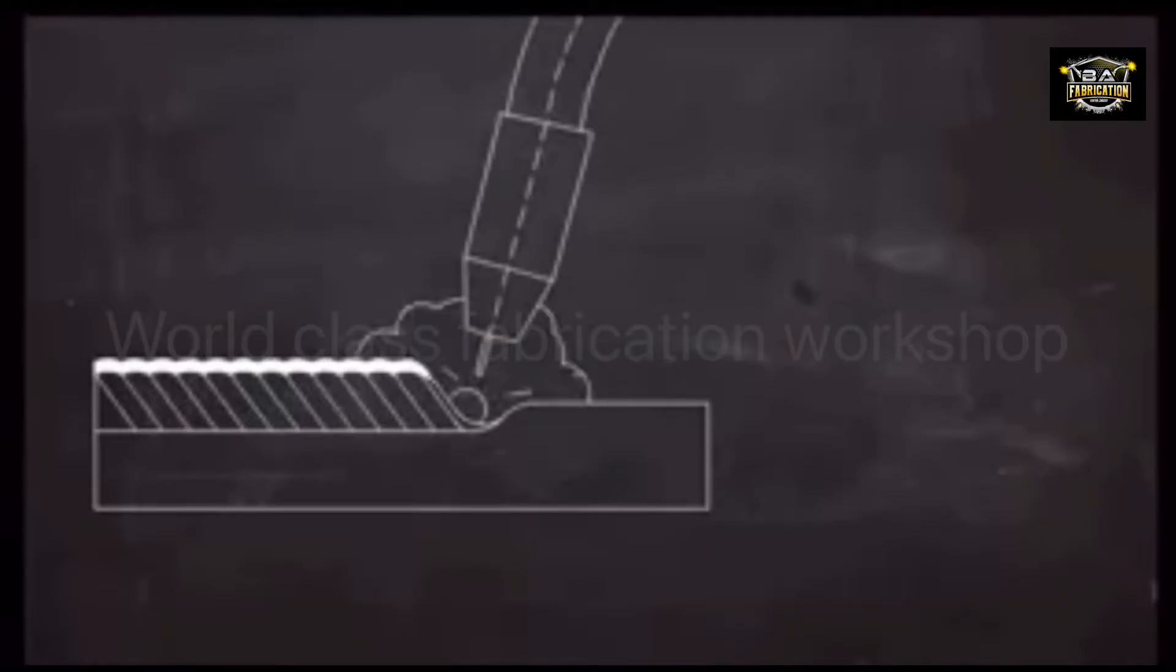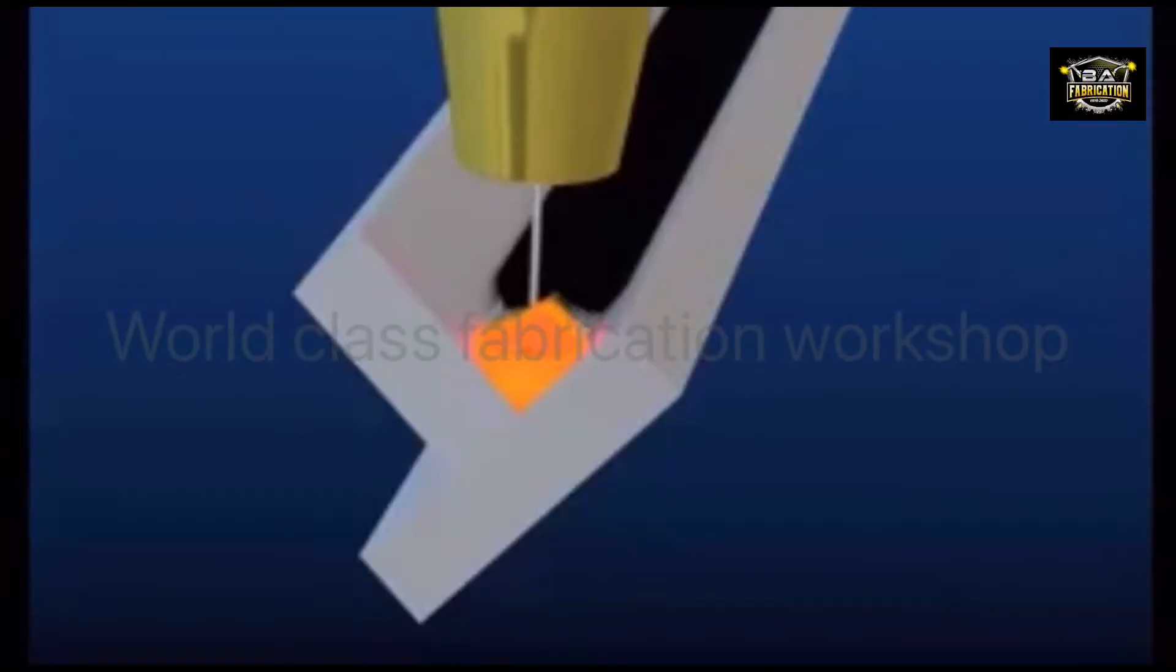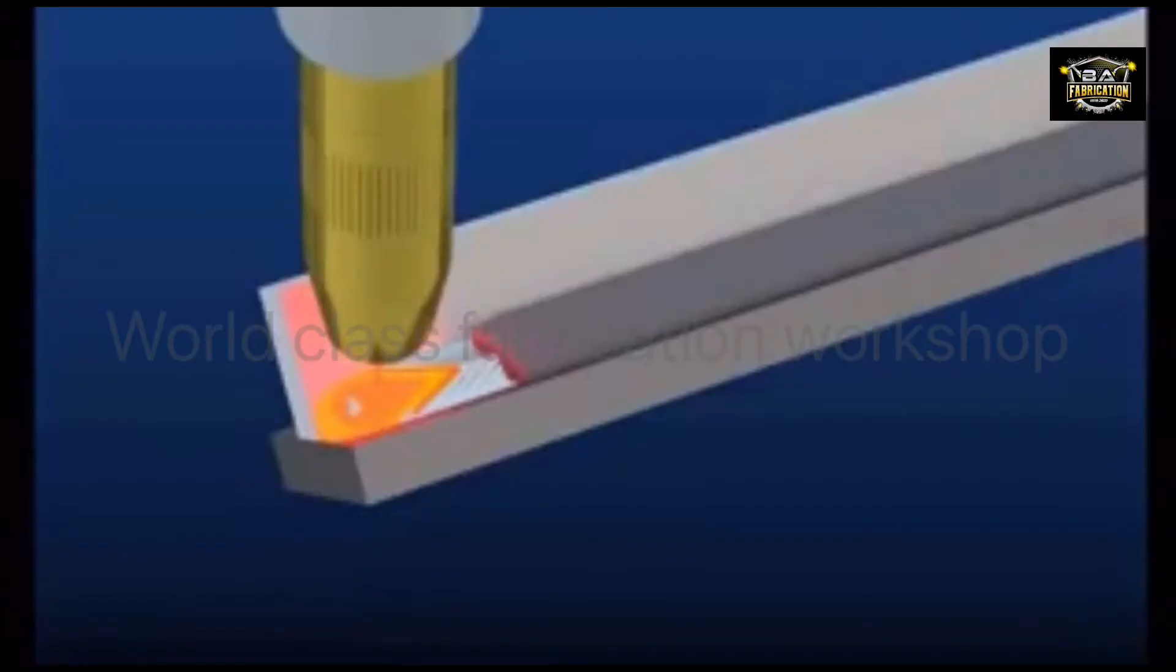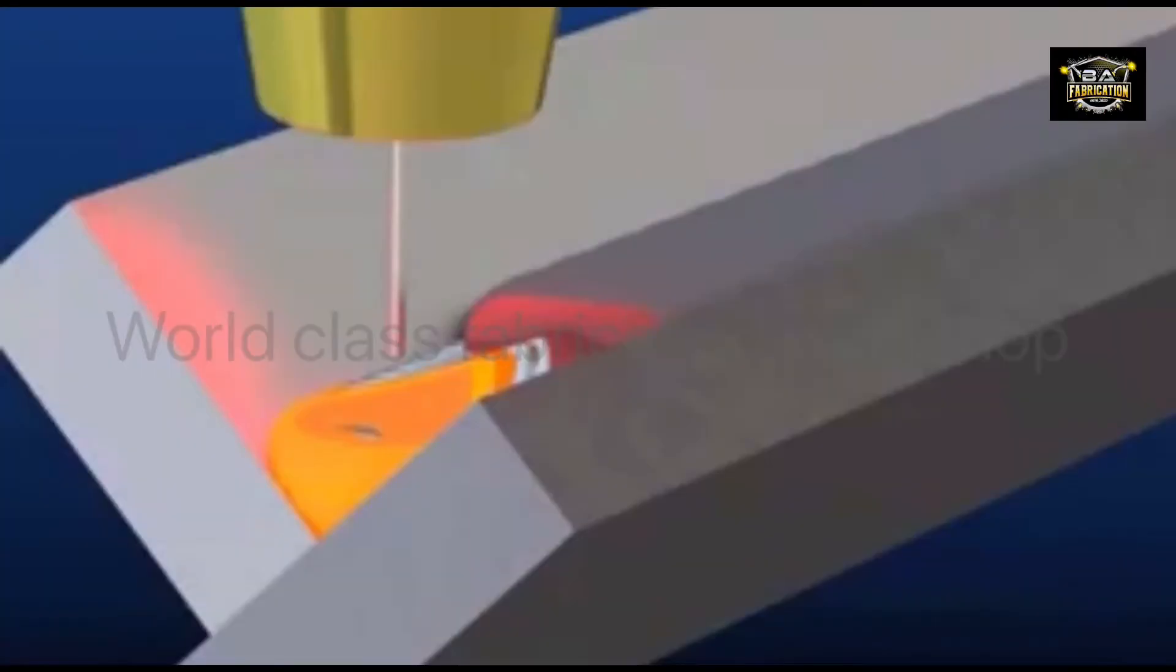As in MIG welding, an electric arc forms between this wire electrode and the workpiece. This arc heats both metals above their melting point. These metals mix together, or coalesce, and solidify to join the workpieces into a single piece.